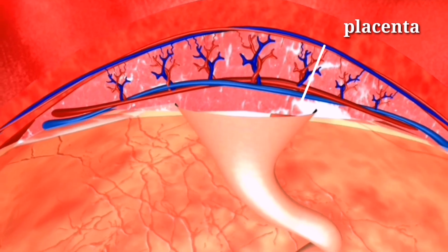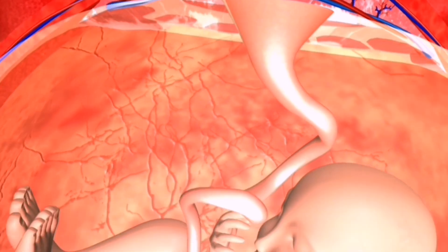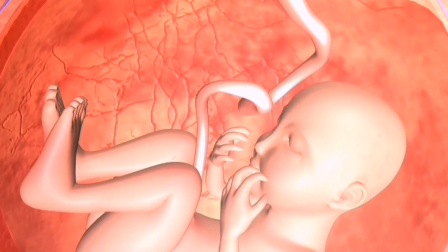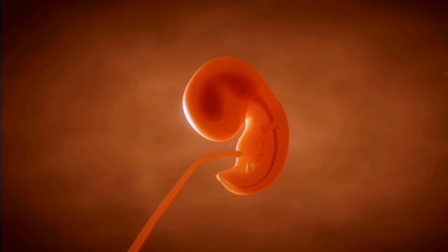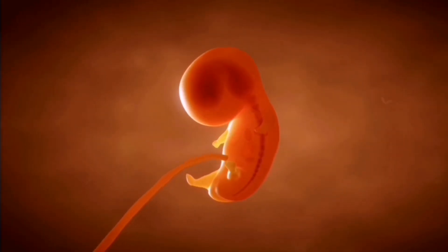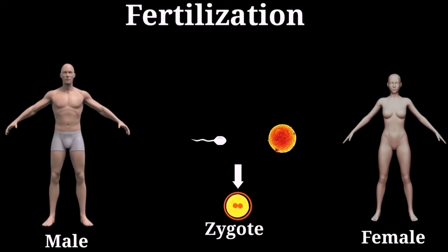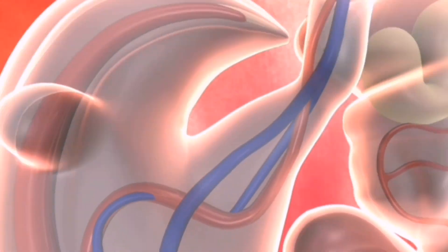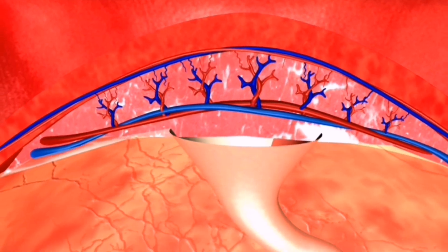The placenta is a temporary organ that forms in the uterus. The embryo continues to develop into a fetus, and after about nine months it is ready to be born. That's the process of conception from start to finish — an amazing journey that results in the creation of a new life. Thanks for learning with me today, I hope you found this explanation helpful.